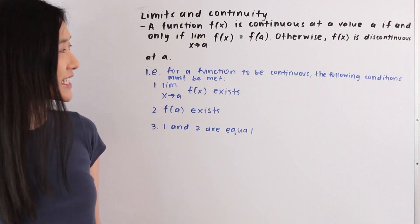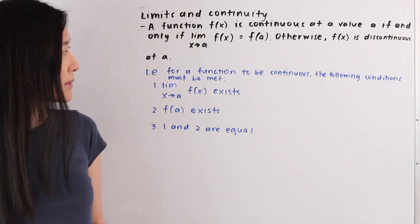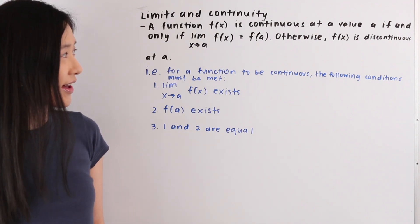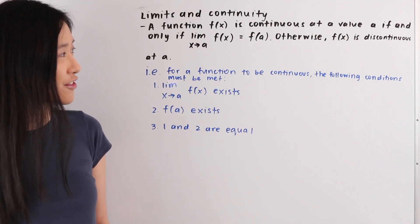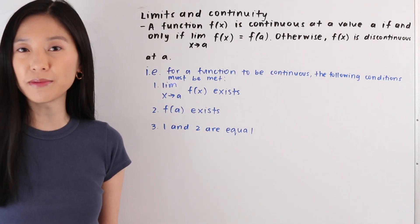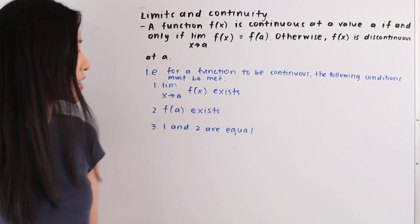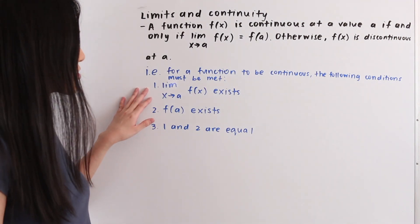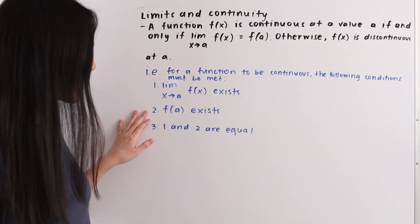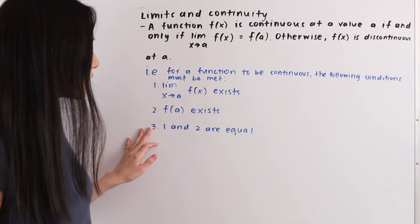A function f(x) is continuous at a value a if and only if the limit as x approaches a of f(x) is equal to f(a). Otherwise f(x) is discontinuous at a. For a function to be continuous, the following conditions must be met: number one is that the limit as x approaches a of f(x) exists, number two is that f(a) exists, and number three is that conditions one and two are equal to each other.